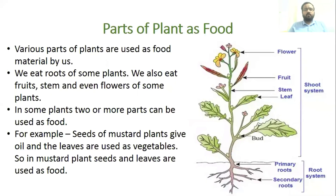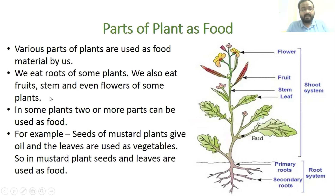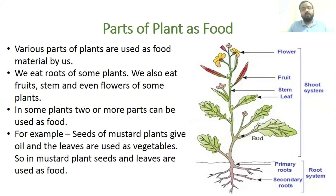Our first topic for today is parts of plant as food. We consume different parts of plants as food — we eat roots of some plants, and we also eat fruits, stems, and even flowers of some plants. In some plants, two or more parts can be used as food.